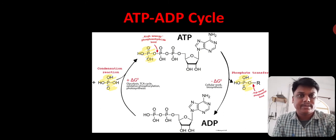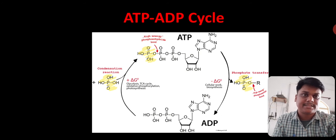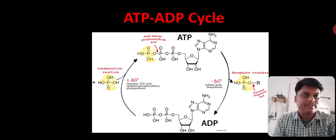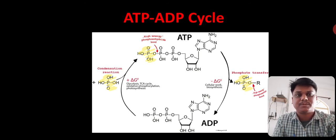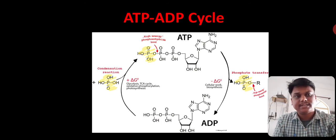When this ADP regains the energy or phosphate from outside or from the system through the processes, that is glycolysis, TCA cycle, etc., it will regenerate the ATP. And when it gives the energy, the energy is utilized for various cellular activities and biosynthesis purposes. So this type of ATP-ADP cycle is continuously going on inside the cell.